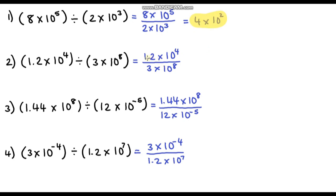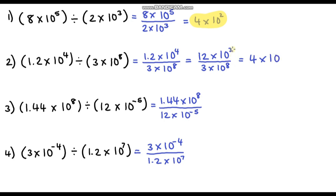Question 2: we've got 1.2 divided by 3. Just like before, I'll multiply 1.2 by 10 to get 12, since 12 divided by 3 is easy. Then I divide the corresponding power of 10 by 10, giving 10 to the power 3. So the numerator becomes 12 times 10 to the power 3. Now 12 divided by 3 is 4, and 10 to the power of 3 minus 8 is negative 5. The answer is 4 times 10 to the power negative 5.